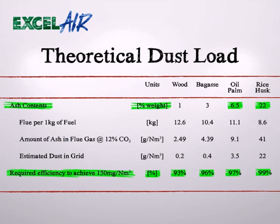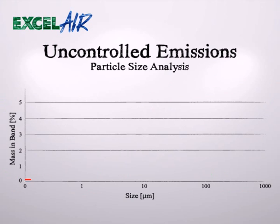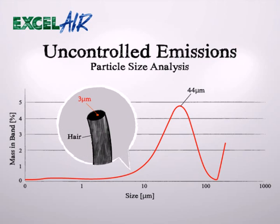From this chart, it is evident that fuel from typical biomass may influence the dust concentration by a factor of 10. While the ash content varies considerably, the particle size distribution after a properly operated boiler is remarkably consistent. A typical distribution is shown in this graph. To keep the particle sizes in perspective, a typical human hair is 70 microns in diameter, and the dot on the hair is 3 microns.